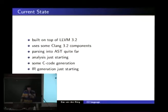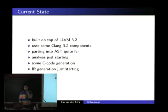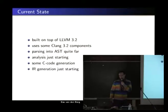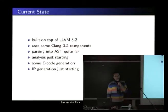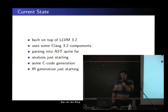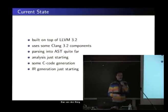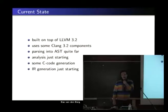We are using LLVM to generate IR code — LLVM IR code — so that we can use the backend to generate the assembly. We did use some Clang components, especially the preprocessor, which we modified slightly. We're also using the diagnostic engine, which is really nice. But the whole middle part — the analyzer, the parser, the semantic analyzer — we stripped it out and replaced them with our own version.